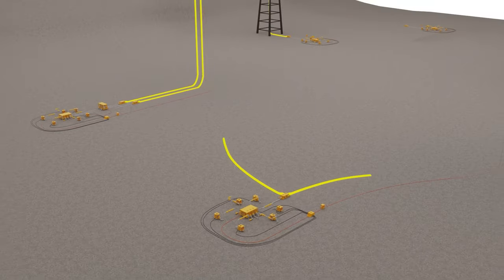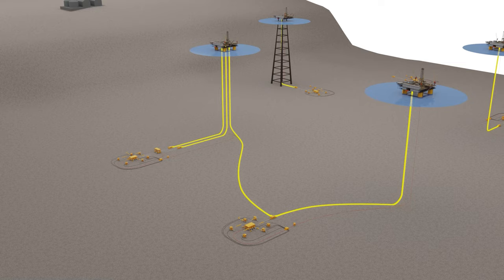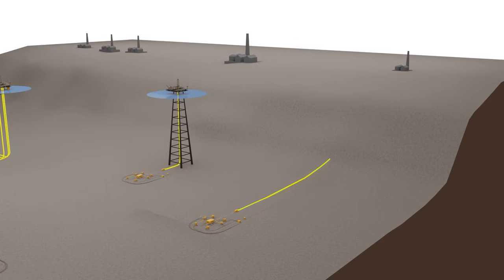A production site may have multiple flowlines that are connected to more than one platform to increase production capacity. Or a flowline can connect directly to an onshore facility.